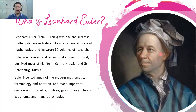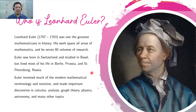But first, we need to know who Leonard Euler is. Euler was one of the greatest mathematicians of all time. His work spans all areas of mathematics and he wrote 80 volumes of research. Euler was born in Switzerland and studied in Basel, but lived most of his life in Berlin, Prussia, and St. Petersburg, Russia. He invented much of the modern mathematical terminology and notation, and made important discoveries in calculus, analysis, graph theory, physics, astronomy, and many other topics.